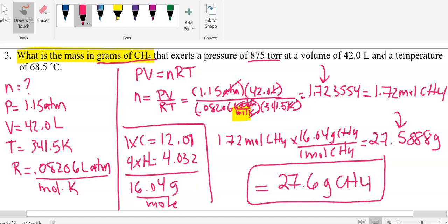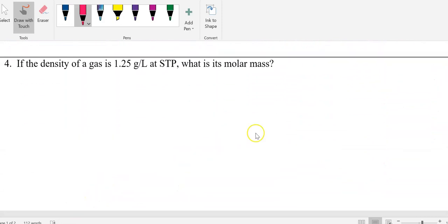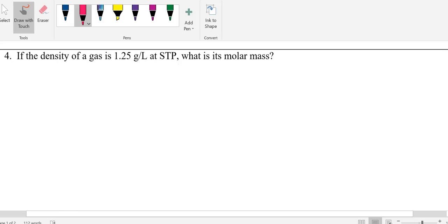Now I'm going to scroll down and solve another one. This particular one, a little tricky. It's saying if the density of a gas is 1.25 at STP, what is its molar mass? In order to solve for molar mass, you need grams per mole.